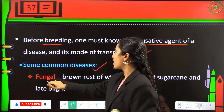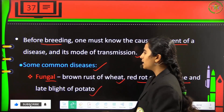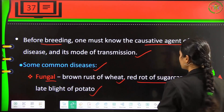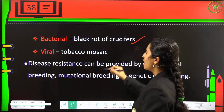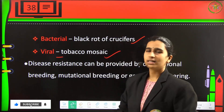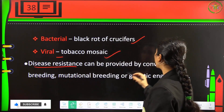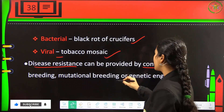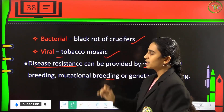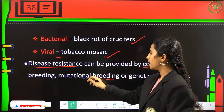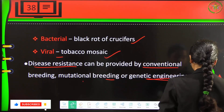Bacterial diseases include black rot of crucifers, and the viral disease tobacco mosaic virus can be seen in tobacco plants. Disease resistance can be provided by conventional breeding, mutational breeding, or genetic engineering procedures. We can obtain disease-resistant crops by conventional breeding, mutational breeding involving sudden genetic changes, or through genetic engineering techniques.